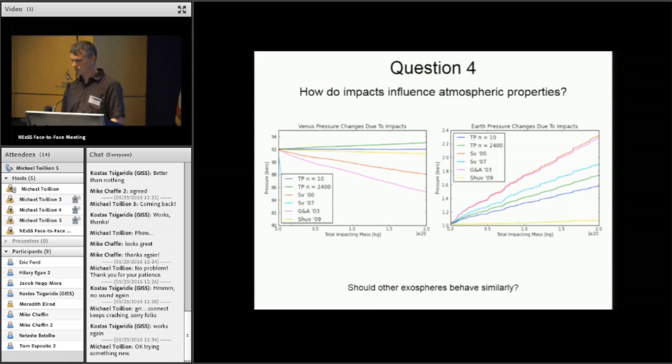But it turns out when she takes different models, different assumptions for what an individual impact does to an atmosphere, and those different models are represented by the different colors in the panels. So no matter whose model she takes, if she puts 10,000 impactors into the Venus atmosphere, the Venus atmospheric thickness goes down by a percent or two, something like that.